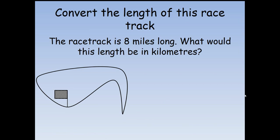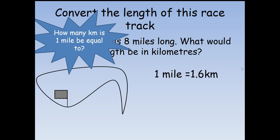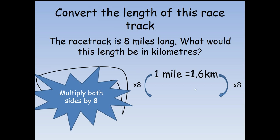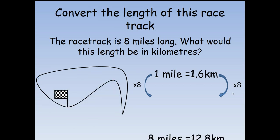I can use those facts to convert between different lengths. If my racetrack is eight miles long and I want to know how long that is in kilometers, I would use the fact that one mile is 1.6 kilometers. If one mile is 1.6 kilometers, to work out eight miles I'd have to times both sides of this equation by eight. One mile times eight is eight miles, and 1.6 times eight is 12.8 kilometers. So if my racetrack was eight miles long, it would be 12.8 kilometers.